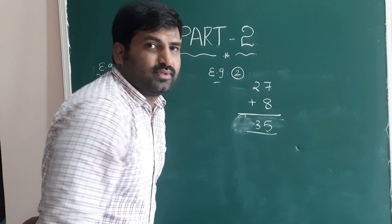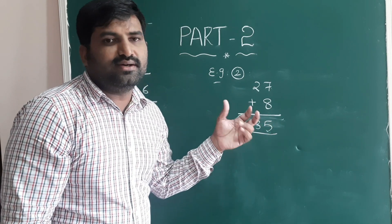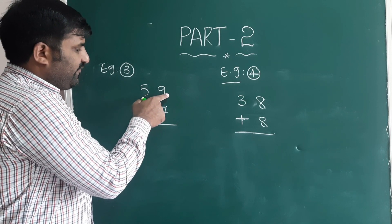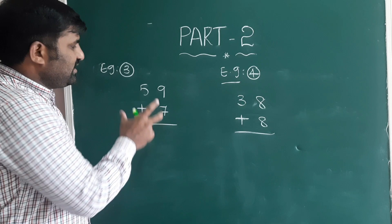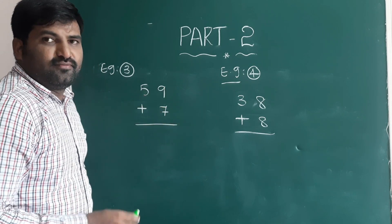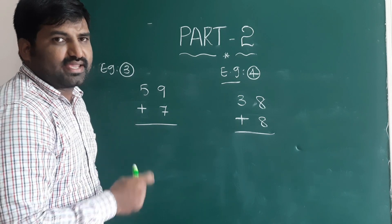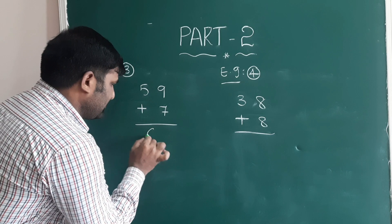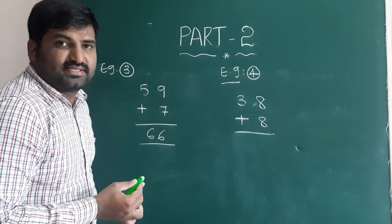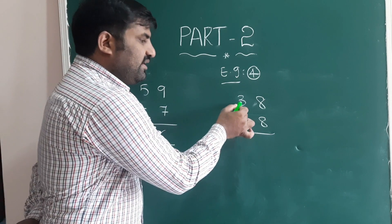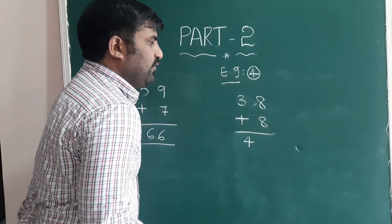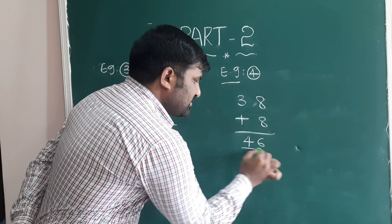So 2 plus 1 is 3, and the units digit of 7 plus 8 is 5, giving 35. Now let's practice two more examples with carrying numbers: 59 plus 7, and 38 plus 8. For 59 plus 7: 9 plus 7 is 16, carry 1, so 5 plus 1 is 6, units digit is 6 — answer is 66. For 38 plus 8: 8 plus 8 is 16, carry 1, so 3 plus 1 is 4, units digit is 6 — answer is 46.